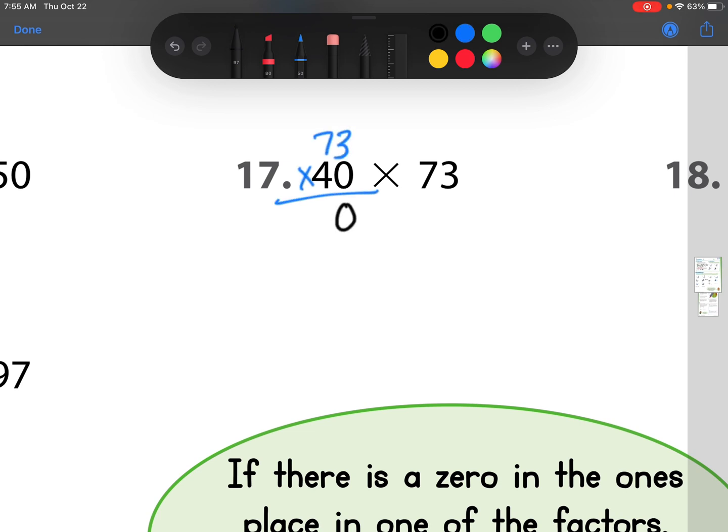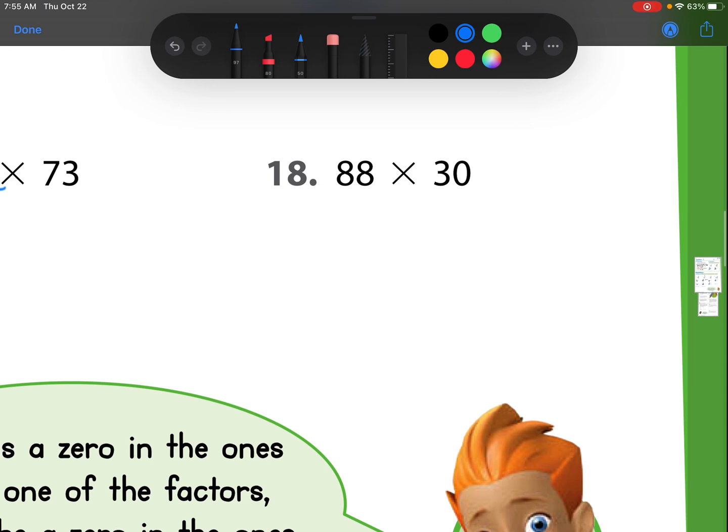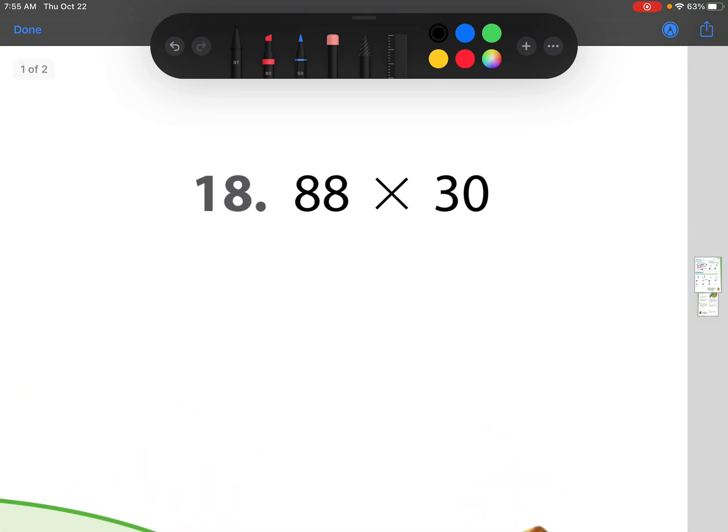Now our next one. We only have 4 more left. We're doing great, guys. 73 times 40. I put the zero down, and now I'm ready to start multiplying. 4 times 3 is 12, regroup that 1. 4 times 7 is 28, plus 1 is 29, 2,920. 88 times 30 for number 18. I put that zero down, because remember I have a zero in that ones place value. And then I can do 3 times 8 is 24, and regroup. 3 times 8 is 24, plus 2 is 26, 2,640.